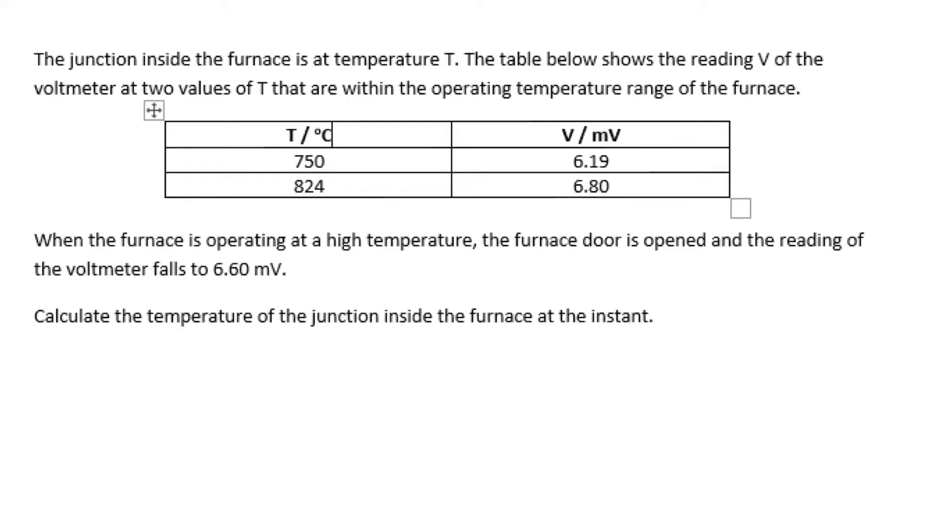In this temperature question, you have a thermocouple and the scenario given is when the furnace is at 750 degrees Celsius, the voltmeter will give you a reading of 6.19 millivolt. Do take note of the units.